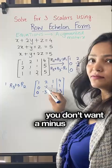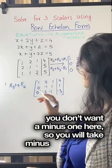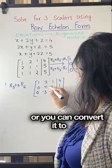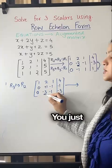In the next step, you don't want a minus one here, so you will take minus one common or you can convert it to plus one. You just have to create a zero here.